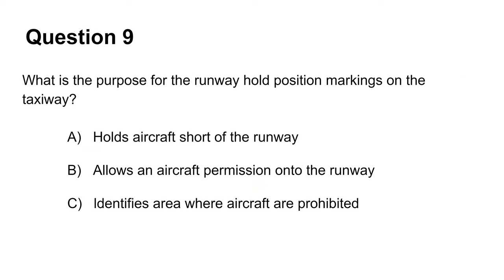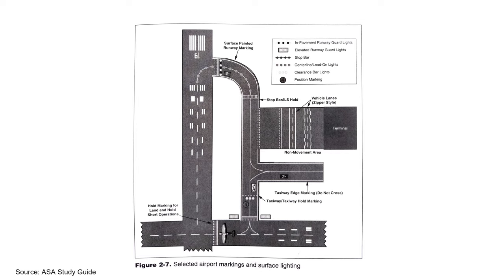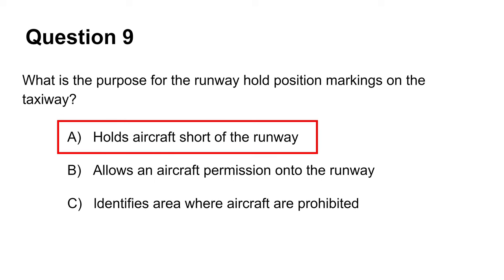The ninth question asks you to identify the purpose of the runway hold position markings on the taxiway. This refers to the markings with two solid and two dashed yellow lines. This is where the aircraft must hold and seek ATC clearance before proceeding onto the runway. Hence, the answer is A.